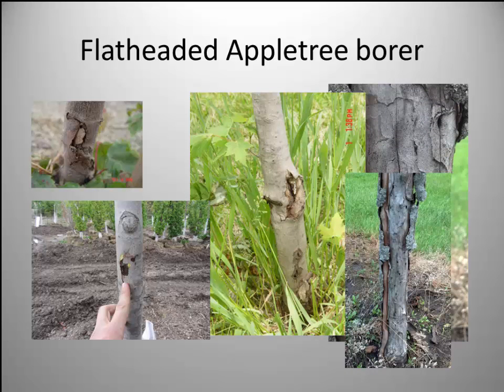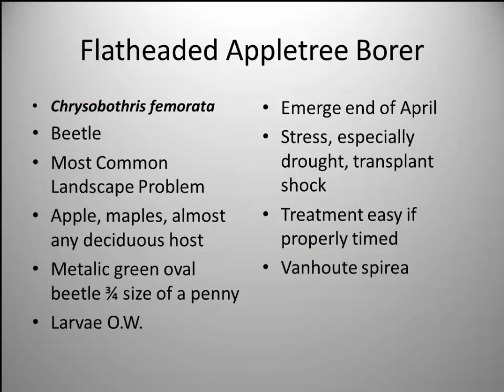This is what a tree looks like in parking lots and compacted soils - mostly stressed, compacted soil environments. The flat-headed apple tree borer is a beetle, very common in the landscape, affecting pretty much any deciduous plant. It's a metallic green beetle, about three-quarters the size of a penny. Larvae overwinter and emerge around end of April, attacking stressed trees - especially drought stress and transplant shock. Treatment is easy if you time it right, and I would suggest treating in your managed landscapes - it's worth it.